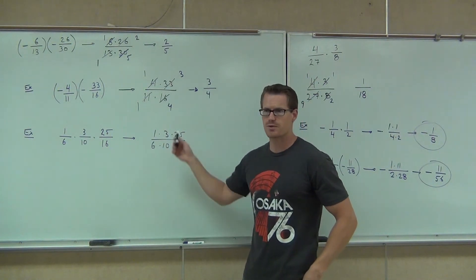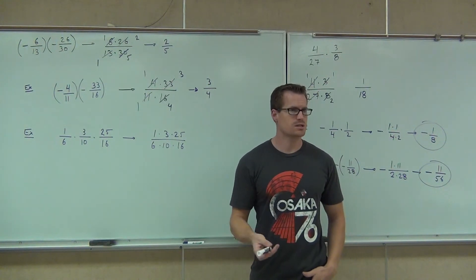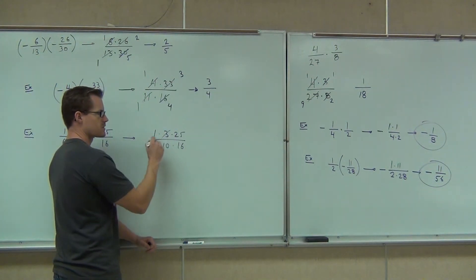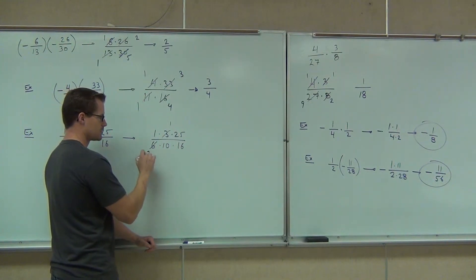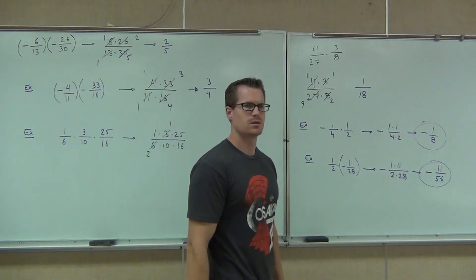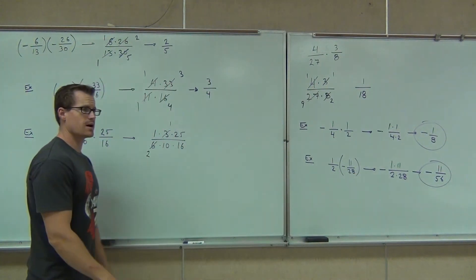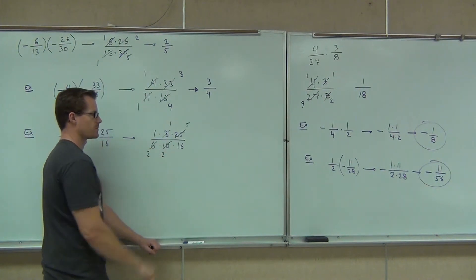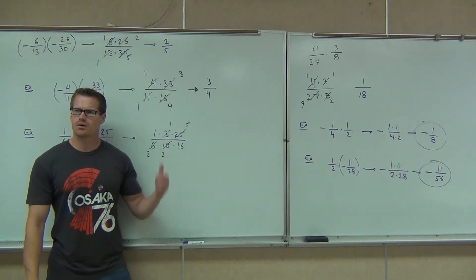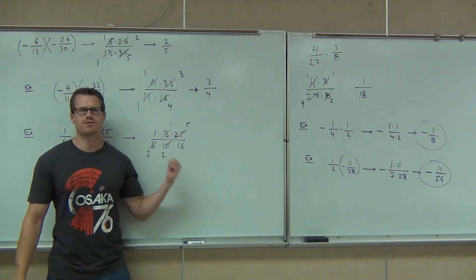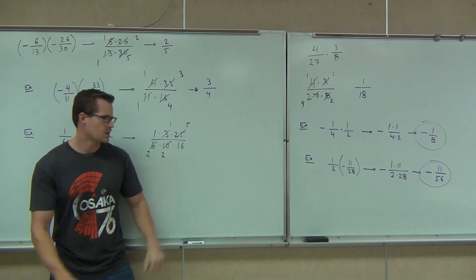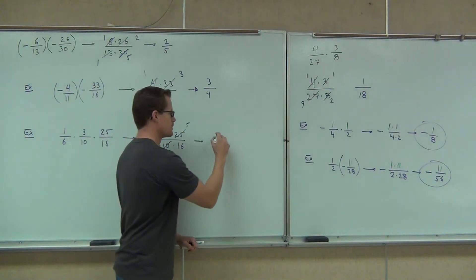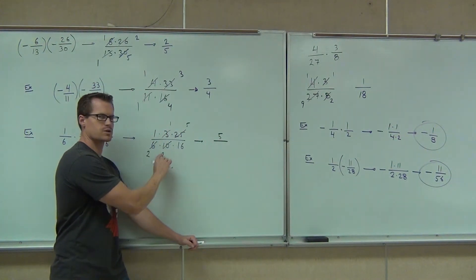Let's look for numbers that share a common factor between the numerator and denominator. 3 and 6 — what number goes into both? 3. So 3 divided by 3 is 1, and 6 divided by 3 is 2. Anything else? 25 and 10 — what number goes into both? 5. 25 divided by 5 is 5, and 10 divided by 5 is 2. Do we see anything else? No. So I've got 1, 1, 5 on top and 2, 2, 16 on the bottom. We multiply: 1 times 1 times 5 gives us 5. We have 2 times 2 times 16 — that's 4 times 16, which is 64.